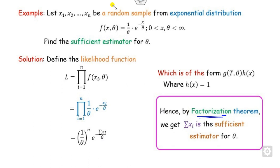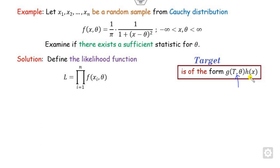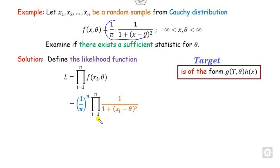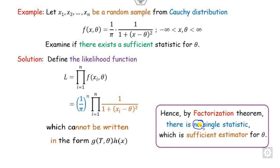For the Cauchy distribution, we start with the likelihood function and substitute the pdf. The resulting expression is a product involving each x_i, but it cannot be expressed as a function of a single sufficient statistic — we cannot simplify it into a sum or product of x_i's in the required form. Therefore, there is no single statistic that serves as a sufficient estimator for the Cauchy distribution.